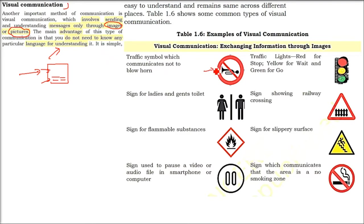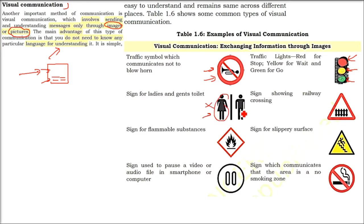There are some types of visual communication everywhere you go. A no-horn sign is everywhere. Traffic signals: red means stop, green means go, yellow means wait — everywhere. If you see a bathroom sign showing a woman, you know it is for women; if you are a man, you go to the right side.